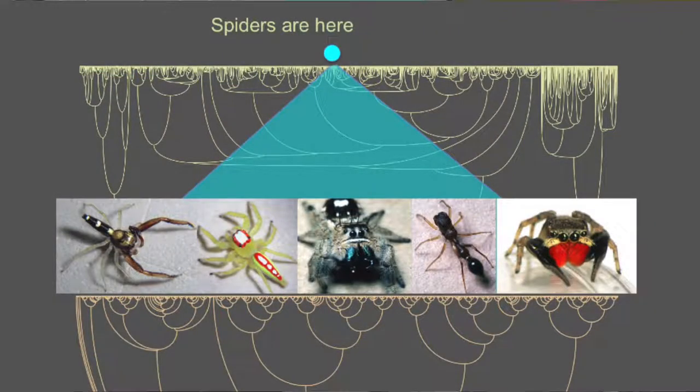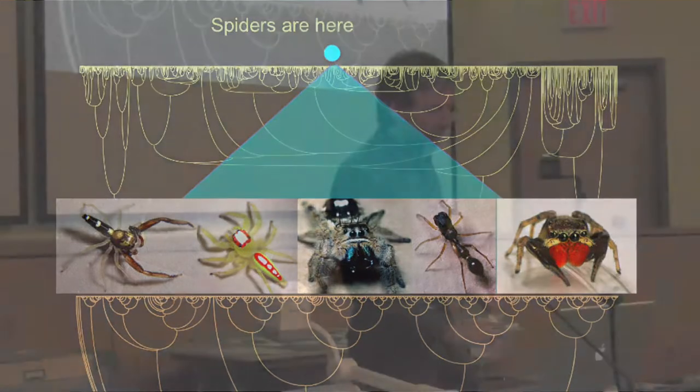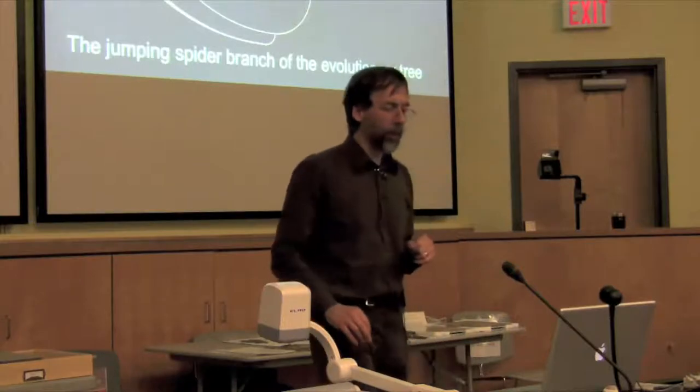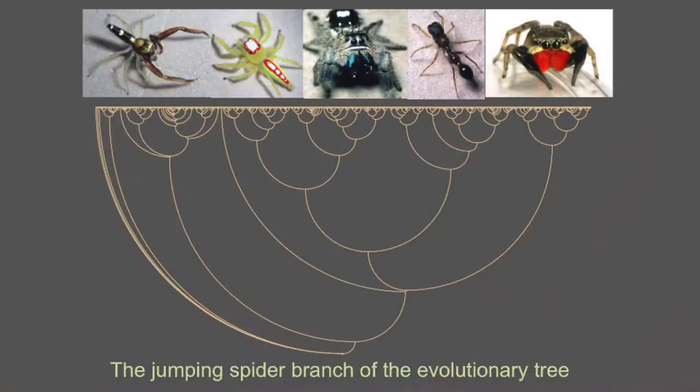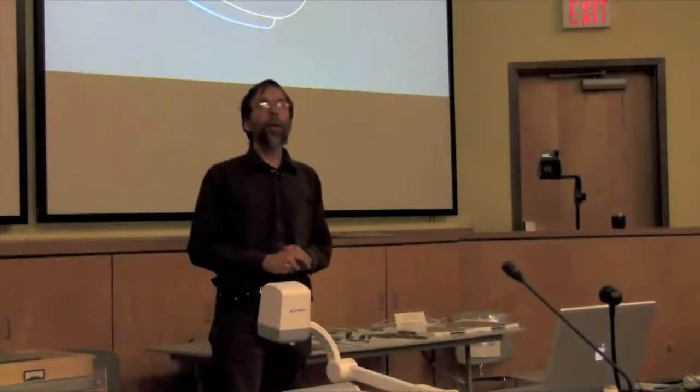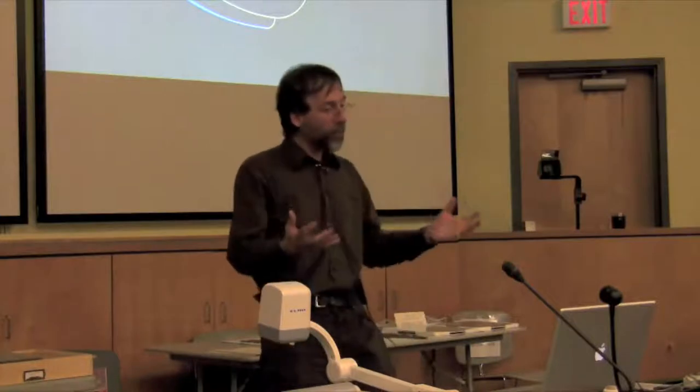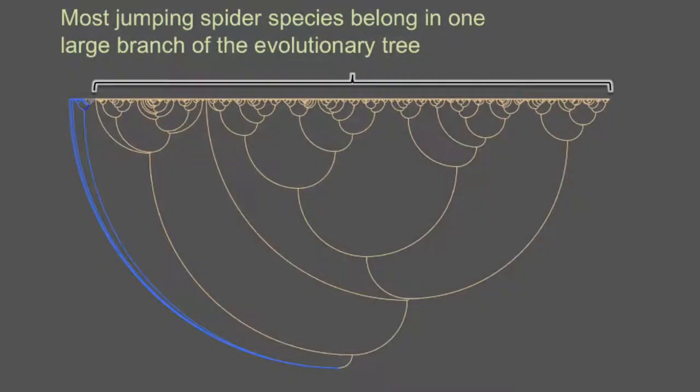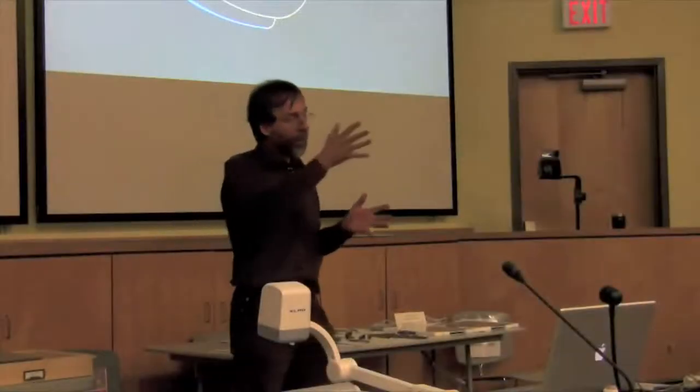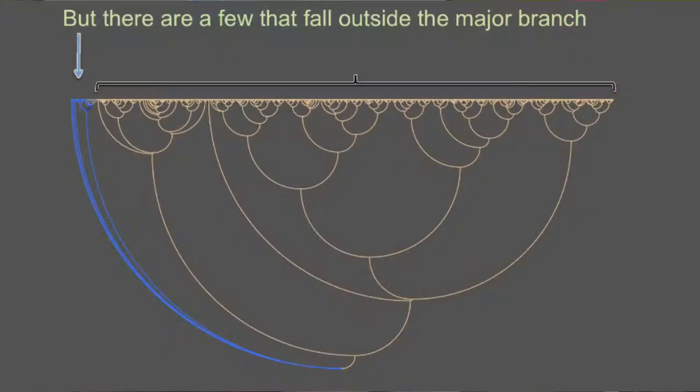So let's get back to our theme about median apophysis. Spiders are here. Here are the jumping spiders. Let's focus on them. So we're going to look at the jumping spider branch of the evolutionary tree. This is just a subsection of the whole thing. And it turns out that most jumping spider species belong in one great big sub-branch of the evolutionary tree of jumping spiders. I've shown that as the sort of cream-colored ones. But there are a few that fall outside, a few jumping spiders that fall outside. They're still jumping spiders that fall outside that major branch, and those are the blue ones I've shown here.